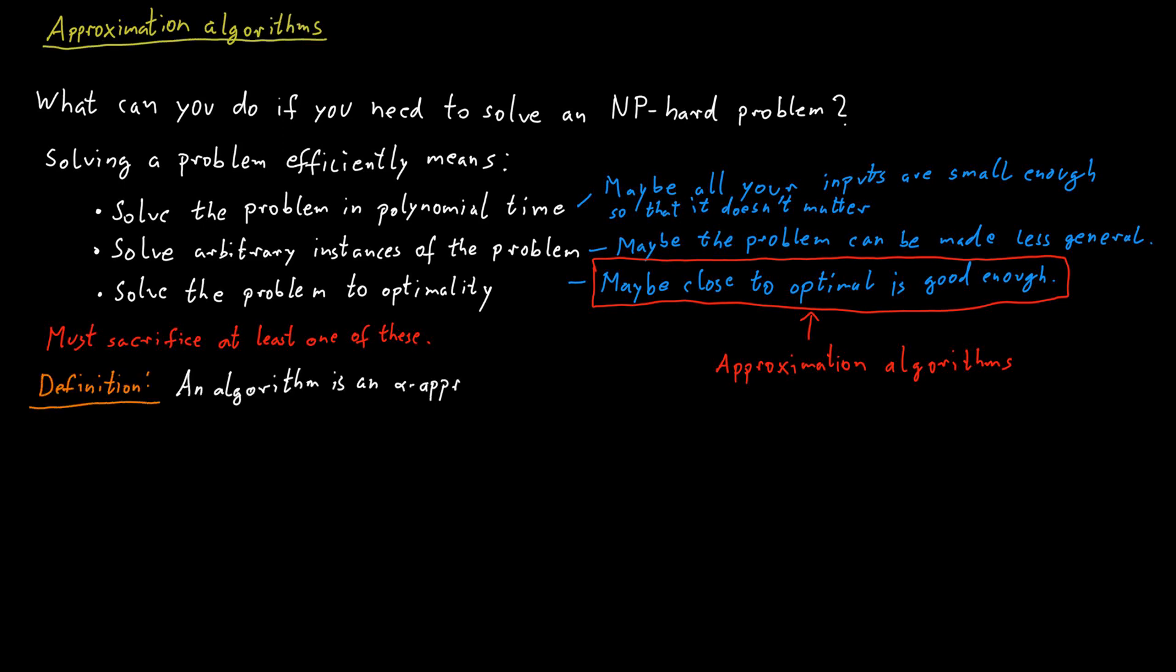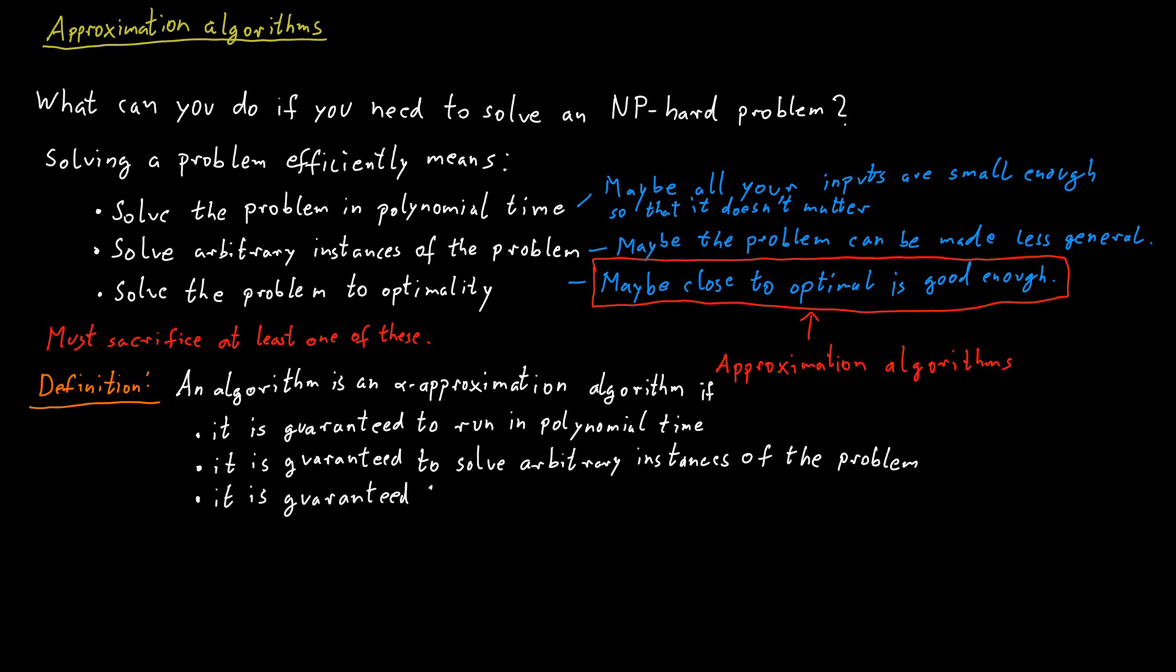An algorithm is an alpha approximation algorithm if it's guaranteed to run in polynomial time, so it's always efficient. It is guaranteed to solve arbitrary instances of the problem, so it can deal with any input you throw at it. And it is guaranteed to find a solution that is, while not necessarily optimal, within a ratio of alpha of the true optimal solution.